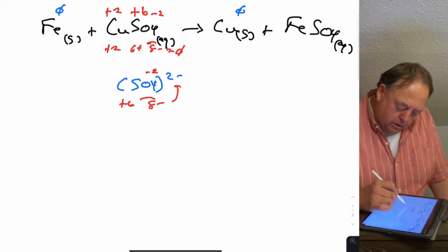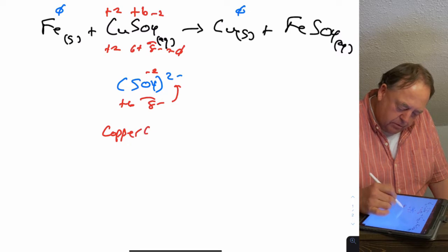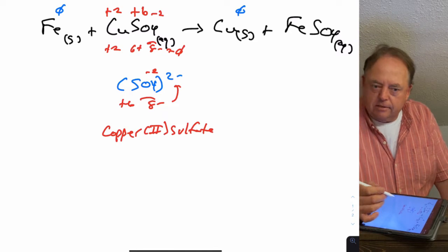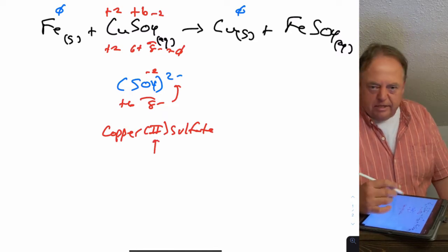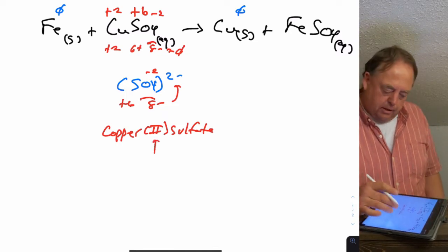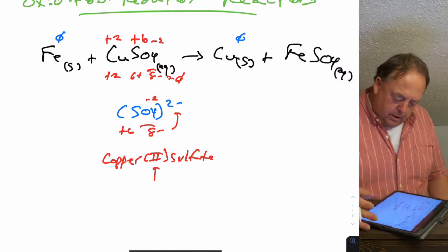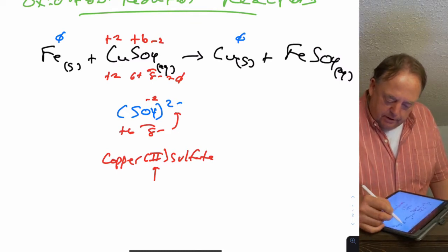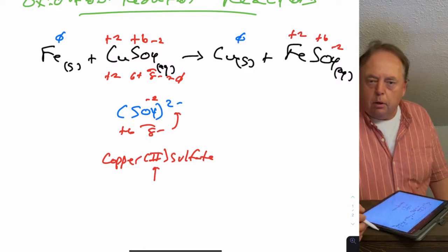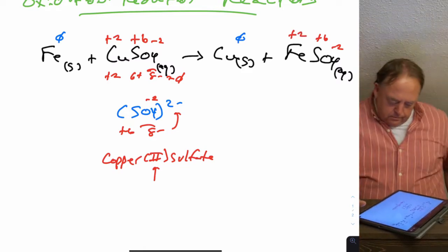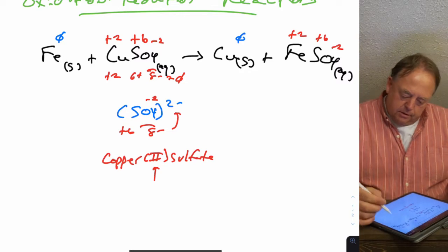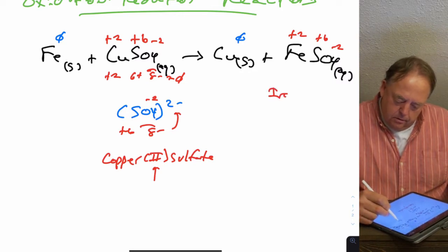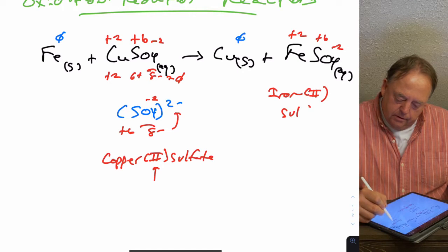Based on what we covered in chapter two, you could have already known this because the name CuSO4 is copper two sulfate — the Roman numeral gives the oxidation number of the transition metal. On the right side, iron sulfate: sulfur is still plus six, oxygen is negative two, so iron is now plus two.